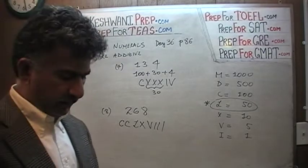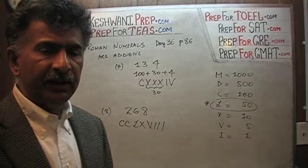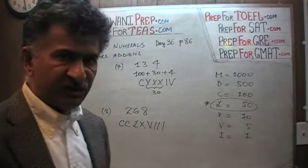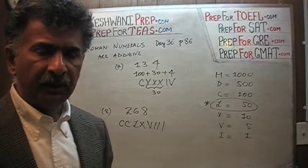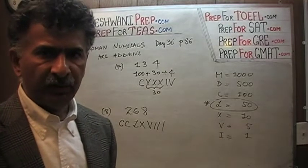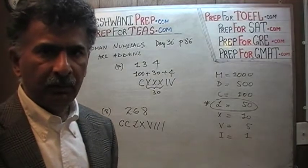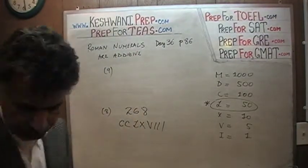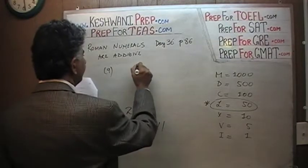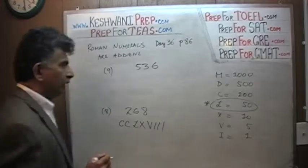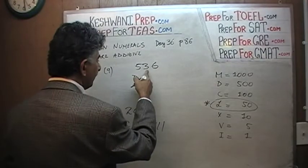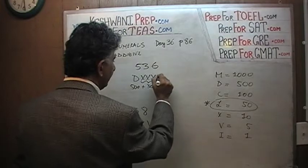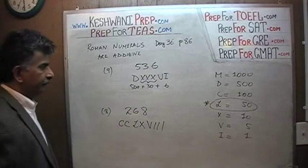Imagine having to multiply these numbers — my god. Only the highly trained people in the Roman Empire could do it. It's amazing that they built a civilization as advanced as that with such a primitive numbering system. The only people who could multiply 237 by 472 were very skilled people and it would take them entirely to figure it out — very cumbersome process. Number nine: five hundred and thirty-six. Five hundred is D. Thirty is X, X, X. And then six. Five hundred and thirty-six.